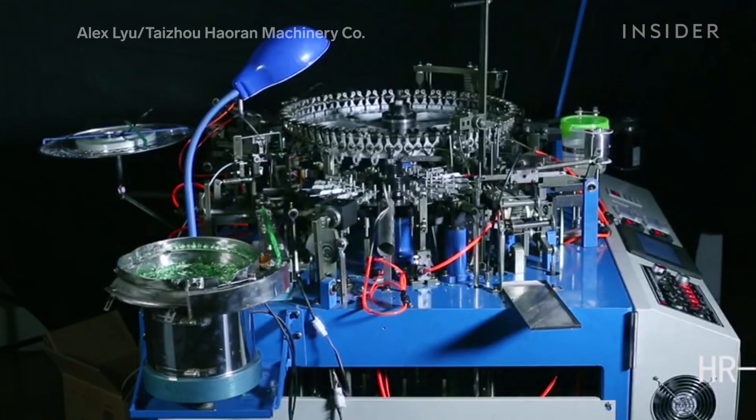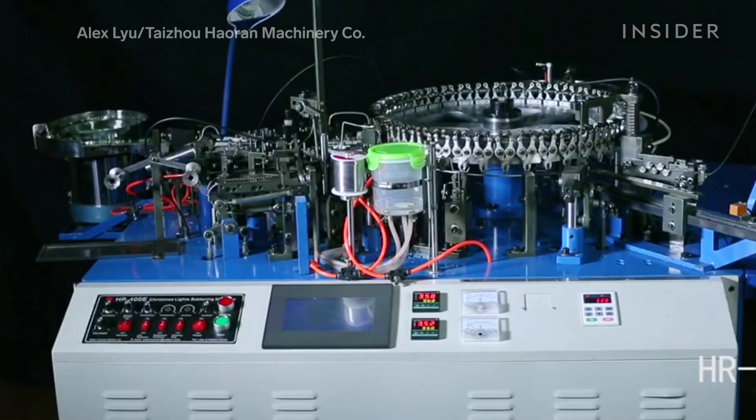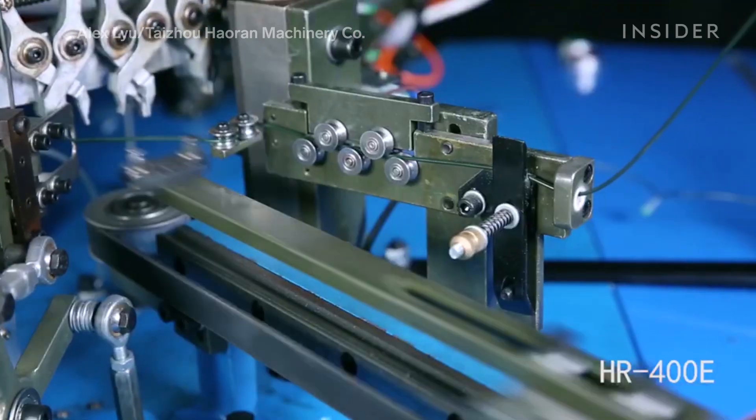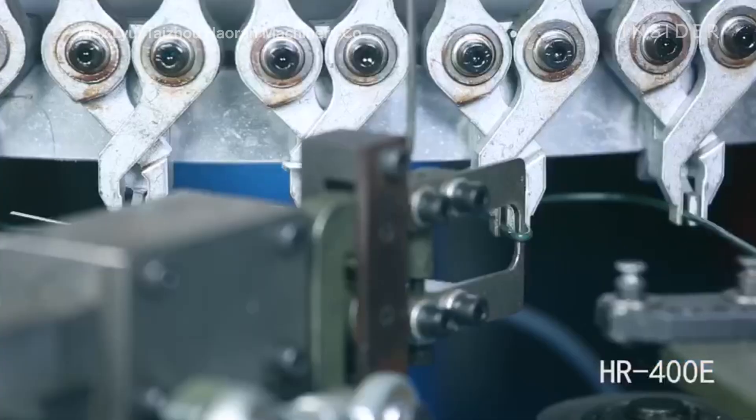Taizhou Hao'an Machinery sells machines that create LED holiday light strings. Here's how it works. First, the wire is fed into the machine so it can be cut and shaped.